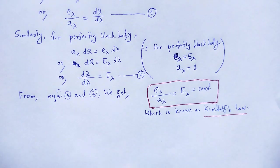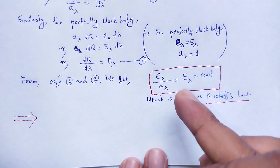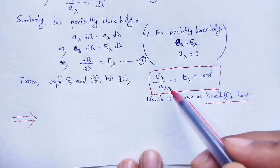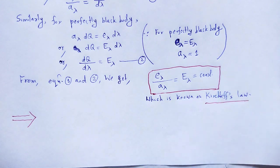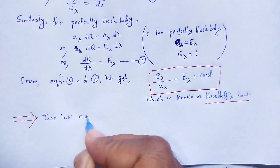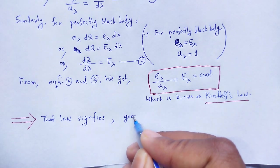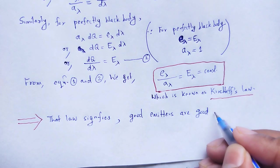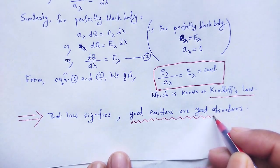What exactly does Kirchhoff's law signify? The physical importance of Kirchhoff's law — look at the expression. If E_lambda is large, then A_lambda is ultimately also large, meaning good emitters are good absorbers. That law signifies that good emitters are good absorbers.